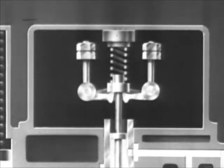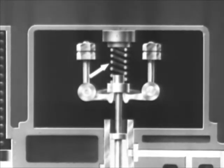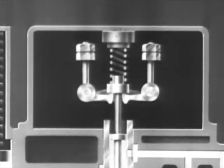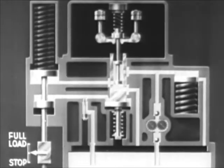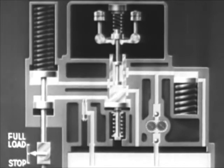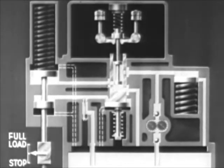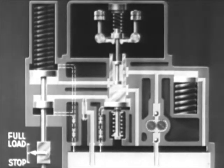The governed speed of the engine is set by changing the tension of the speed-adjusting spring. The pressure of this spring determines the engine speed necessary for the flyweights to maintain their central position. Oil, allowed to leak past the various plungers for lubrication purposes, is drained into the governor oil sump.